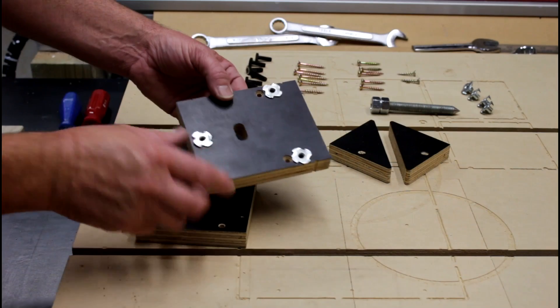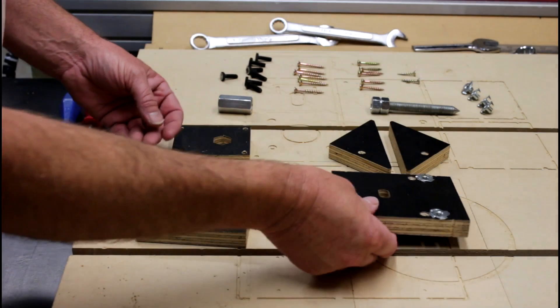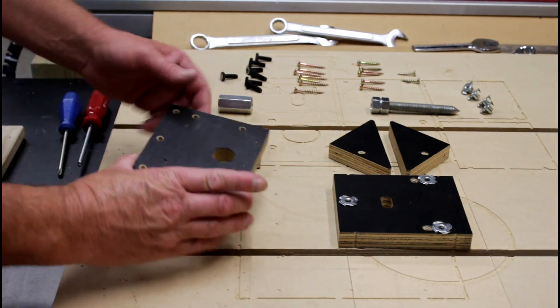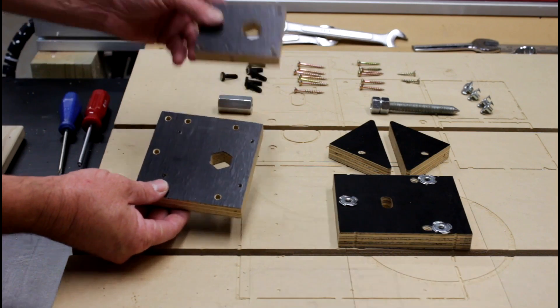Now that the T-nuts are inserted here, we can start looking at assembling the next piece. The next piece we need to do are these two here.